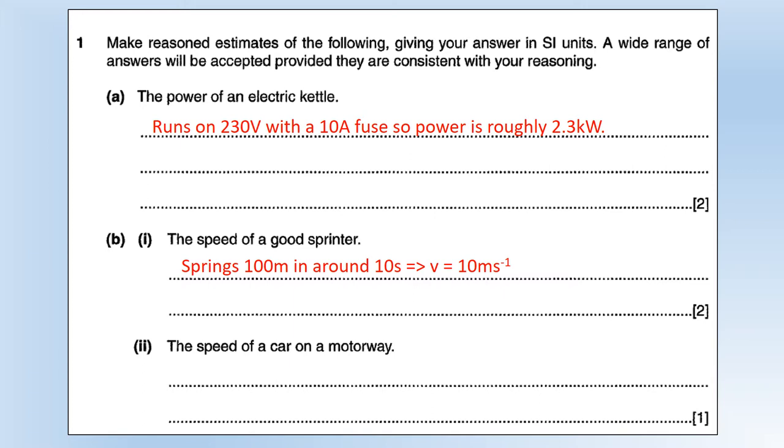The speed of a car on a motorway: most people will probably go above 70 but let's say the average is about 70 miles per hour. I'm going to convert that into meters per second because we have to give them in SI units, so that's about 31 meters per second.